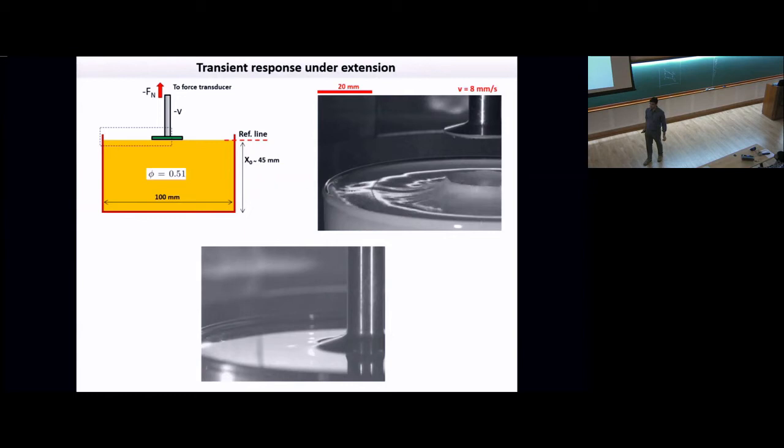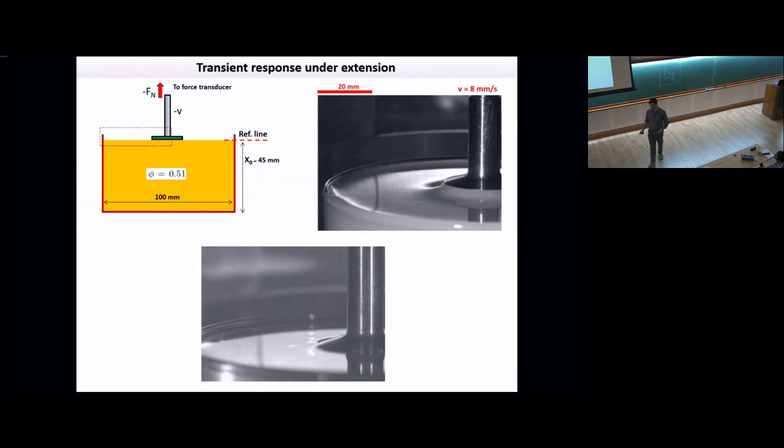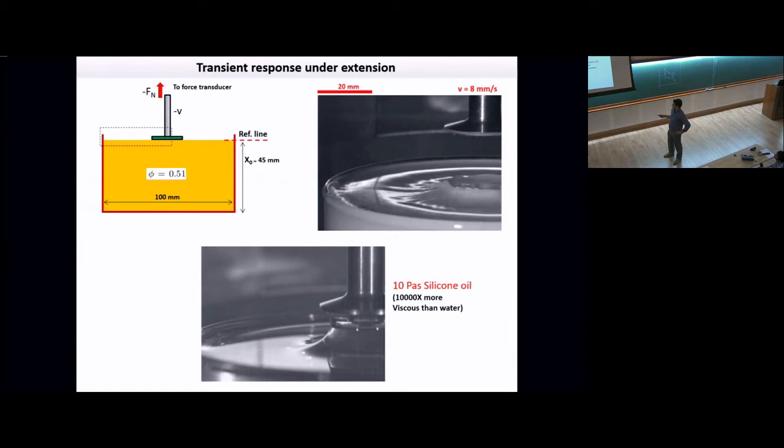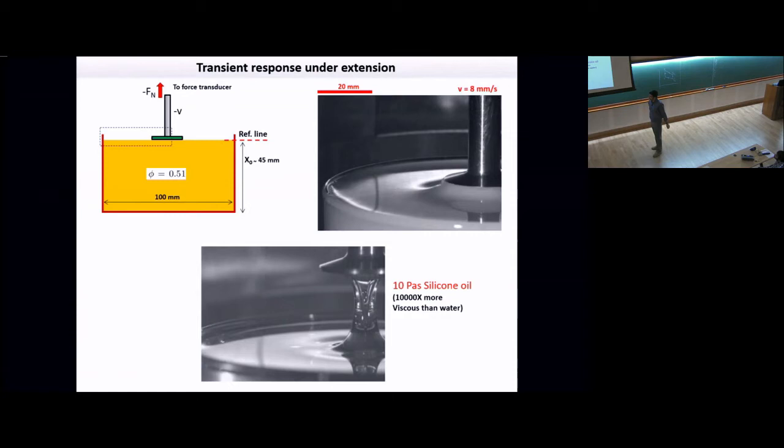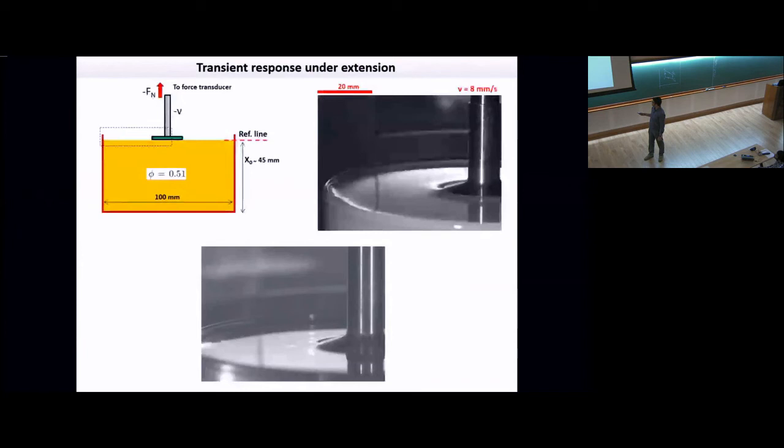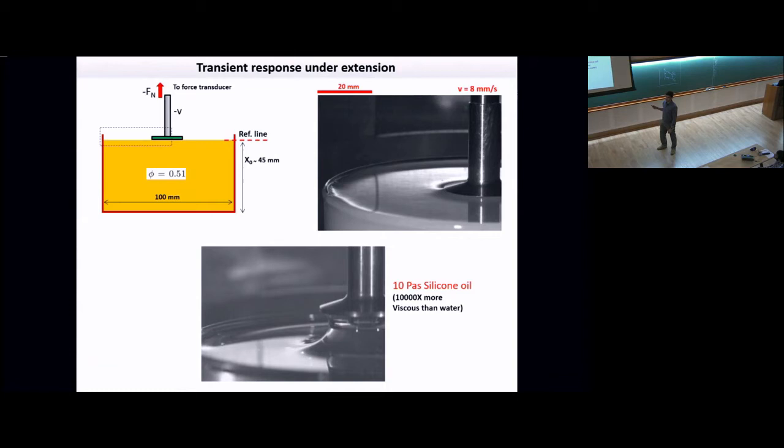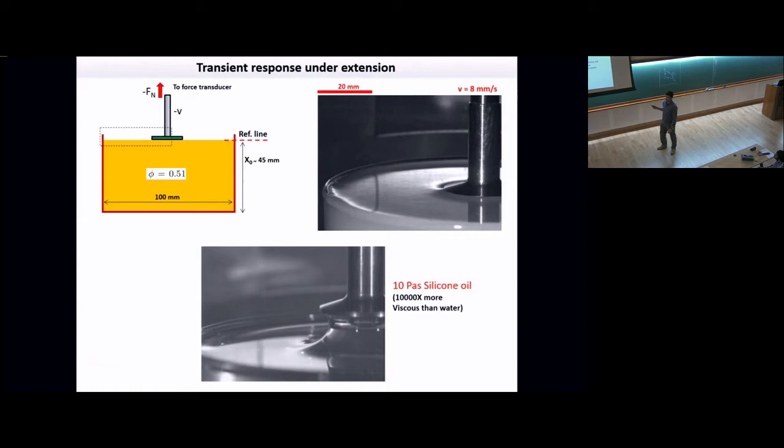So then I took a Newtonian liquid, but the viscosity is 10,000 times more than water - almost even more viscous than honey. If I keep all the parameters the same, you can see the difference. It goes up and forms this nice snake, and then this fluid flows down. This is typical behavior you see if you take out a spoon out of a jar of honey. Something different is going on for dense suspension, even if you pull onto it.